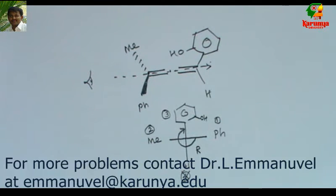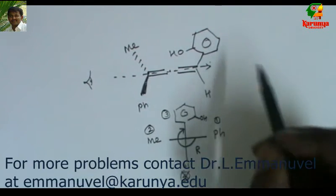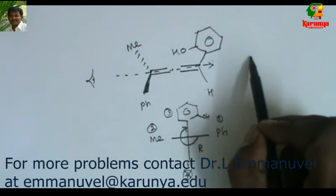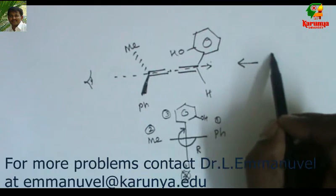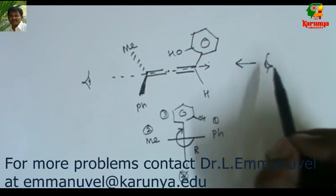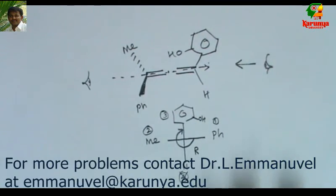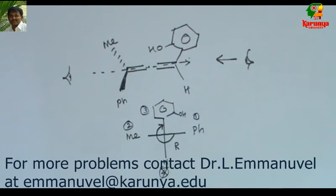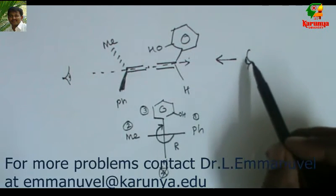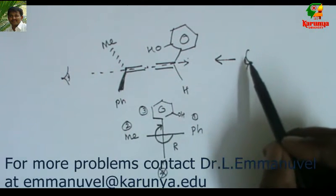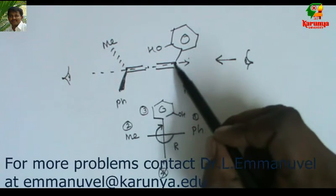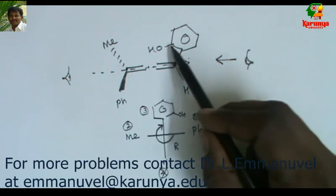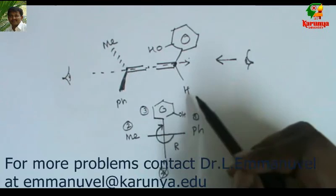So that is the configuration of this compound — it is R. You can also view from the other side; it is possible. If I view the molecule from there, I should still get the same configuration, which is R. Let us try that also. When I look from here, first I will come across this carbon, which has the hydroxyphenyl group and hydrogen.